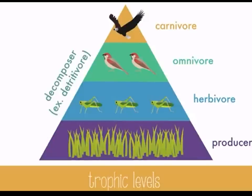The next level are known as omnivores. These animals eat both plants and animals, like a bird that eats seeds and insects. The top and final trophic level are the carnivores — these are the animals which strictly eat other animals, also known as hunters.